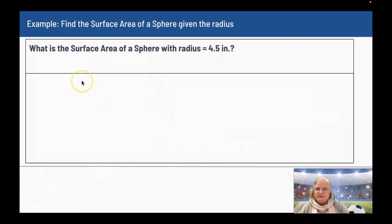What is the surface area of a sphere with radius 4.5 inches? My surface area formula is A equals 4 pi r squared. So if I plug in what I know, pi, I'm using 22 divided by 7, again you can use the pi symbol on your calculator or you can use 3.14.